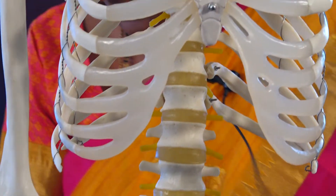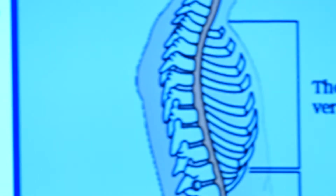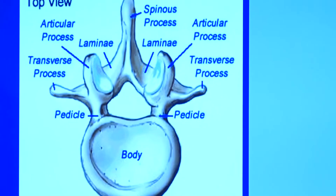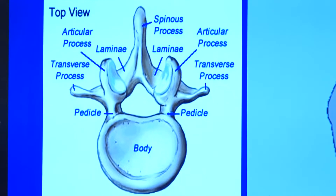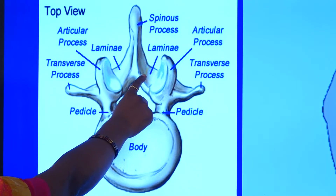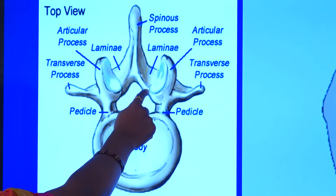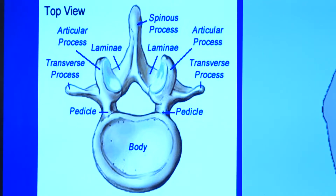Just have a look at each vertebra — what characters do they bear? There is a body, a small pedicle protrusion, and then you can find articular processes. These are the ones which help in articulating the adjacent vertebrae. Then there is a small lamina and a spinal protrusion. There is a small cavity-like structure here — this is the region through which the spinal cord runs. This is a side view where you can visualize the various processes.